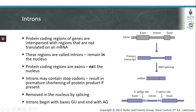Most introns begin with a GU at the 5' splice site and end with an AG at the 3' splice site. This means that an intron would begin with the nucleotides GU and end with the nucleotides AG.